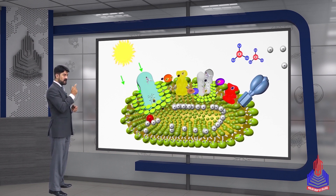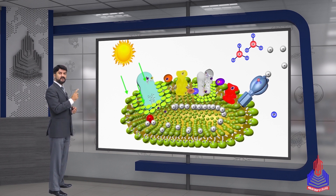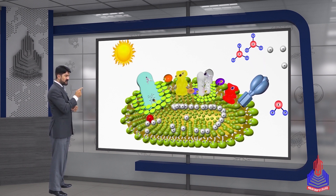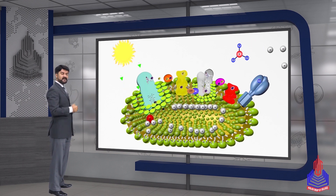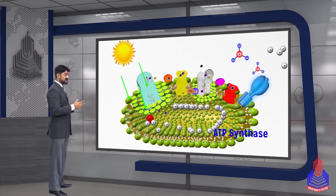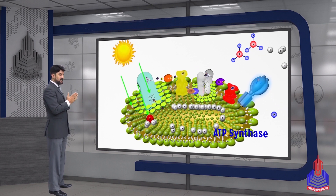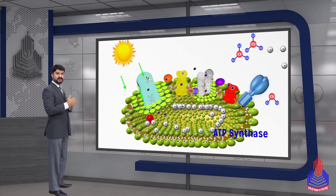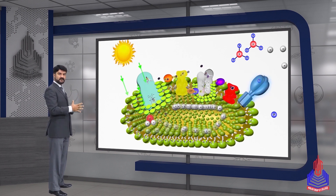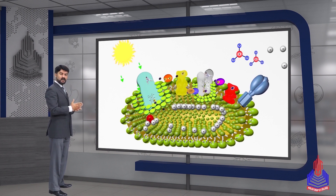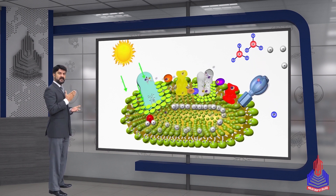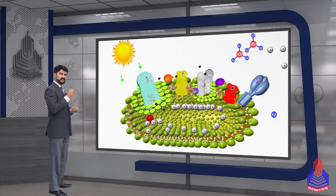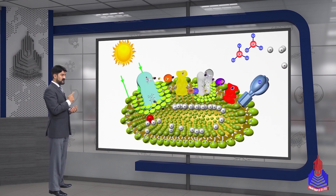Chemiosmosis: protons are chemicals that always move from higher concentration to lower concentration. Their concentration is higher inside the granum and lower outside in the stroma. So these protons move from the granum towards the stroma. As they move, nature uses this energy: ADP plus Pi are joined together to form ATP.